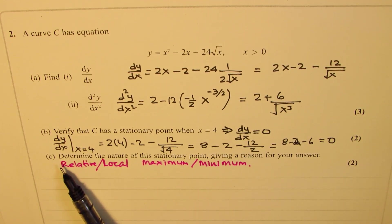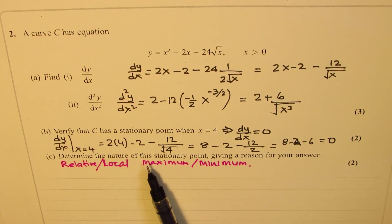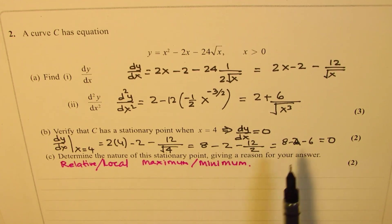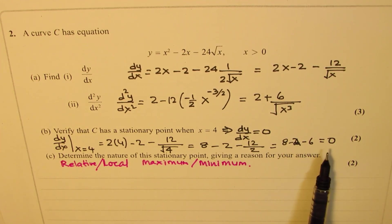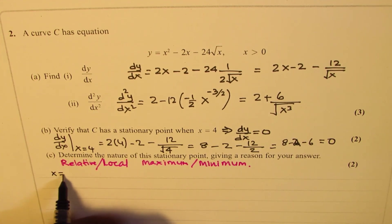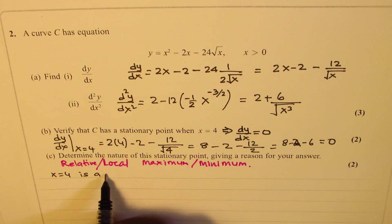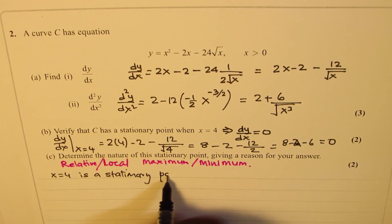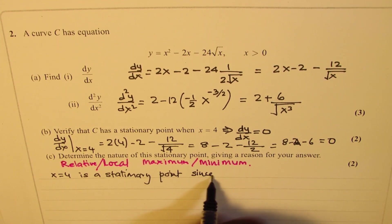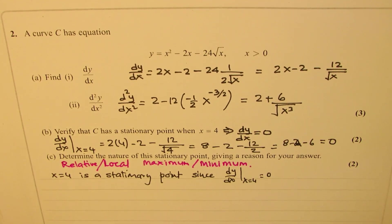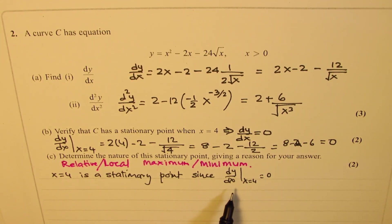Now part C is determine the nature of the stationary point, giving a reason for your answer. So now we could have, since we have a stationary point at x equals 4, so we know x equals 4 is a stationary point since dy/dx at x equals 4 is equal to 0. Now that really means it could have a maximum or a minimum.